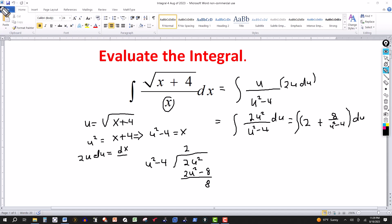And then this is a partial fraction now for this part here, the 8 over u squared minus 4. The 2 no problem. Integral of 2 with respect to u would be 2u, where u is the square root of x plus 4.